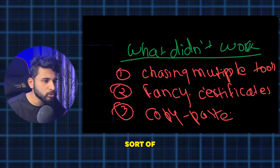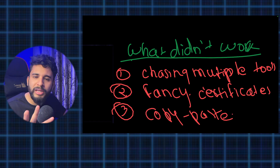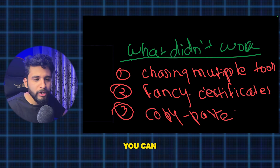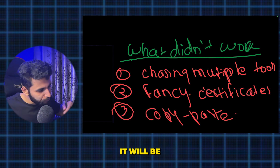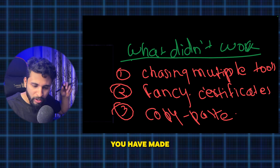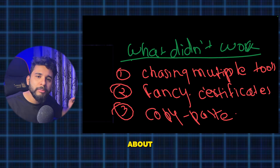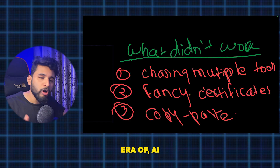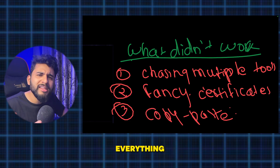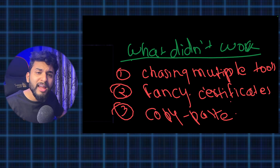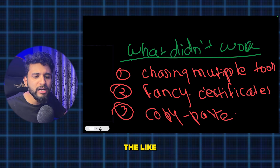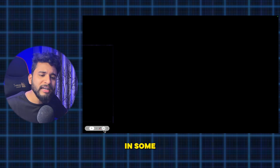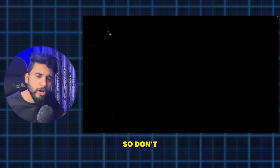The third mistake is copy-paste projects done without any personal contribution. To be honest, you can start with copy-paste projects when you're beginning. Watch from YouTube, make the project — that's fine. But add some minor features so that when you post on GitHub, you have the confidence that you made this feature. Use AI tools like ChatGPT, Claude, or Copilot to get ideas and improve.